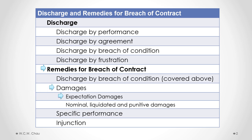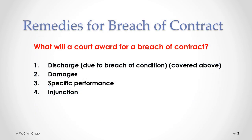We'll jump to looking at damages. There are a number of different types of damages, and the first and most common type is called expectation damages. The types of remedies a court may award are: first, discharge due to a breach of condition; second, damages; third, specific performance; and fourth, injunction. In this particular part, we will focus on damages, and more specifically, expectation damages.